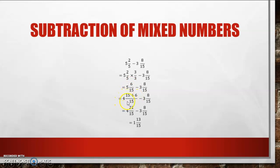Now my 5 will change to 4 because I used another whole to make up my fraction. Then my second number remains the same. 15 plus 6 will give me 21. Now I can subtract. 4 minus 3 will give me 1, and 21 minus 8 will give me 13 over 15. Can I simplify? No. It is in its simplest form.